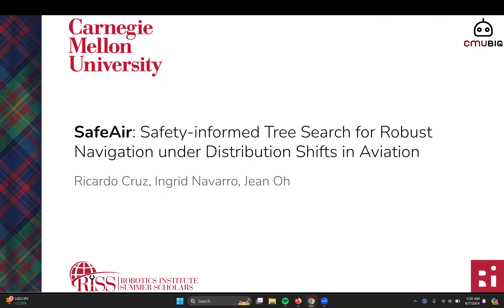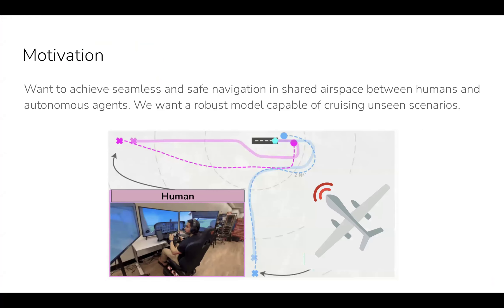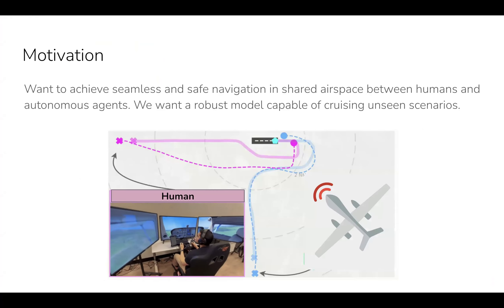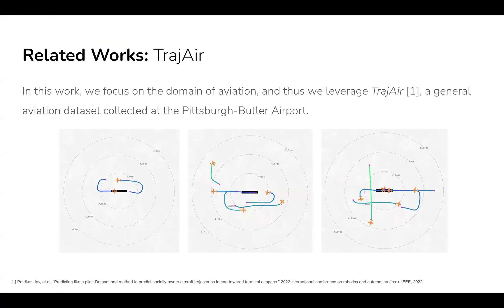Motivation: in human-centered domains such as general aviation, we want robust algorithms that ensure the safety of everyone. However, generating realistic safety-critical data remains an open challenge. Basically, we don't want to endanger anyone and want a robust model capable of handling unseen scenarios. Since we're in the domain of aviation, we use TRAGER, a general aviation dataset collected at the Pittsburgh Butler Airport.